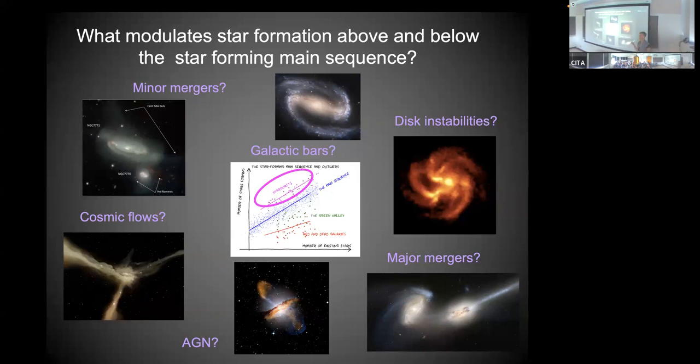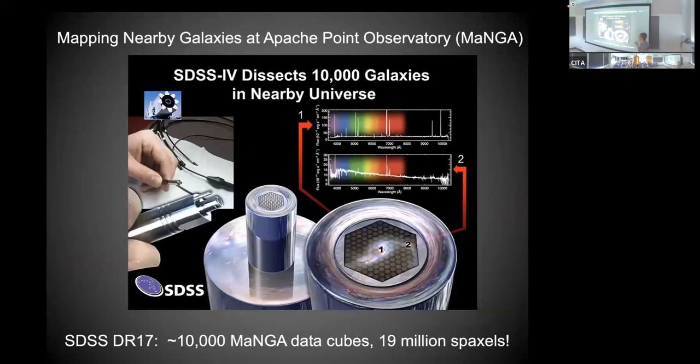How are we going to start to disentangle which of these might actually be at play and which might be dominant? Our friend in all of this is being able to spatially resolve where star formation is happening. You're going to get a very different signature if you have a merger versus a massive bar versus a clumpy disk - it's all structurally different. Being able to use large surveys of spatially resolved spectra is where we've been able to make progress. There are a number of surveys around. I'm going to be focusing on MaNGA, which is part of the Sloan generation.